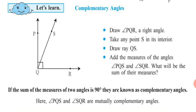The sum of their measures will be 90 degrees. No matter where you take point S, when you draw Ray QS in the interior of Angle PQR, which is 90 degrees, the two angles formed will always add up to 90 degrees. If the sum of the measures of two angles is 90 degrees, they are known as complementary angles. Here, Angle PQS and Angle SQR are mutually complementary angles.